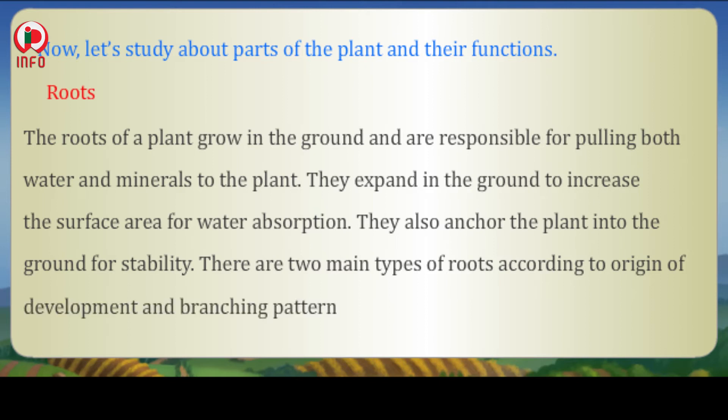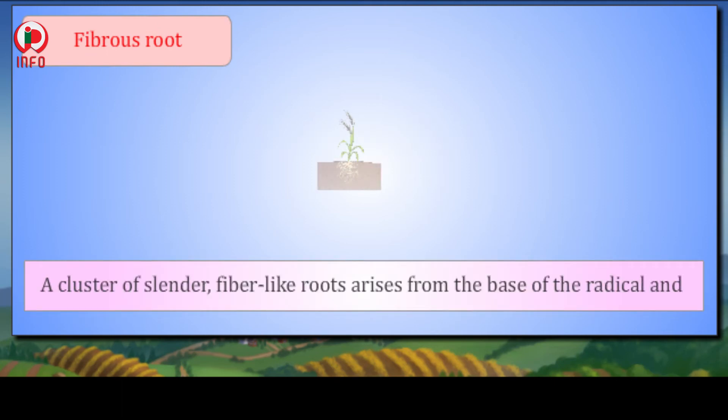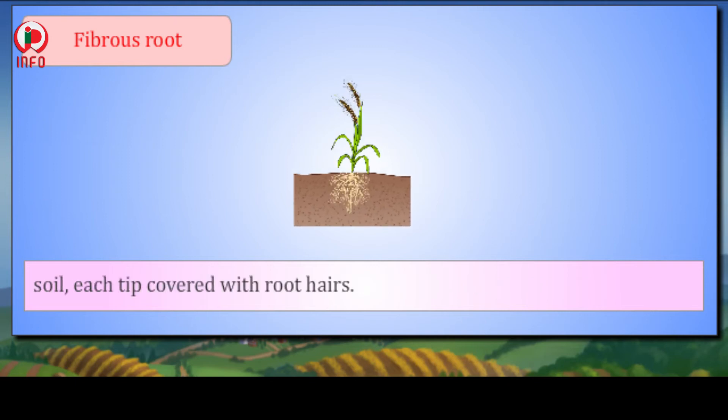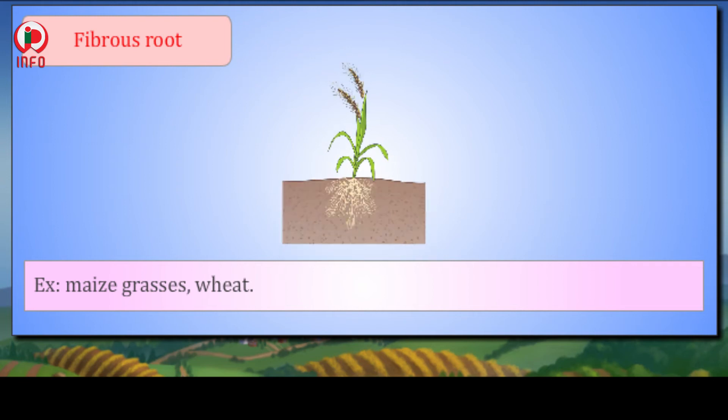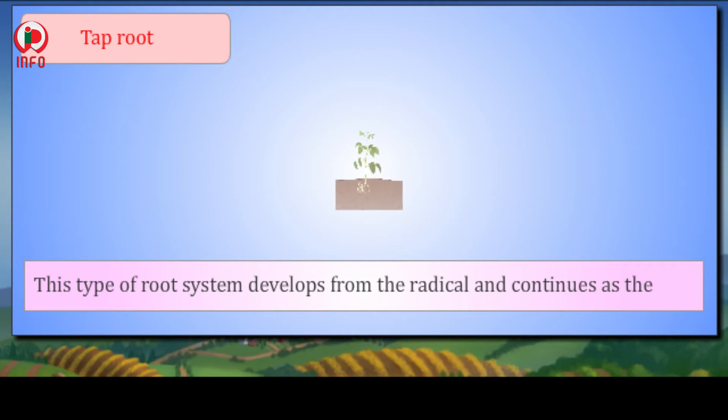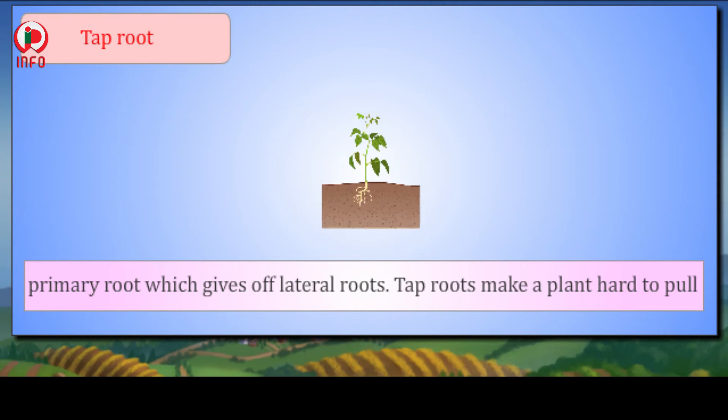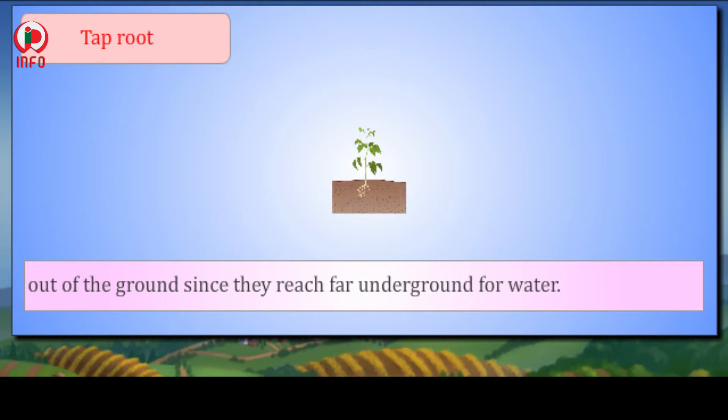There are two main types of roots according to origin of development and branching pattern. Fibrous root: A cluster of slender fiber-like roots arises from the base of the radical and plumule, which constitute the fibrous root system. These roots spread in the soil, each tip covered with root hairs. Examples: rice, grasses, wheat. Taproot: This type of root system develops from the radical and continues as the primary root, which gives off lateral roots. Taproots make a plant hard to pull out of the ground since they reach far underground for water. Examples: gram, china rose.